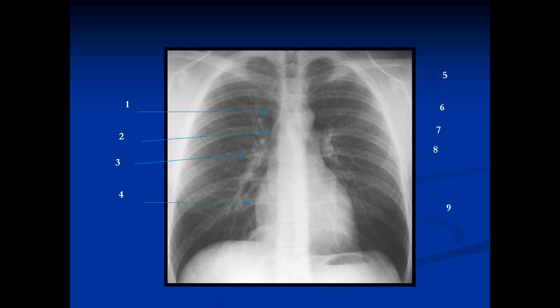We can see the right atrium here — a nice sharp border where it sits. The airway you can see in the midline; it's black. You can see it all the way down to the level of the carina, where it bifurcates into the right and left main bronchi. The little notch here is formed by the aorta, which we can see in relief. The reason we see the aorta so well is because there's air next to mediastinal soft tissue.